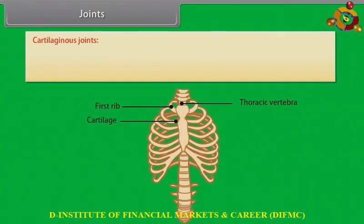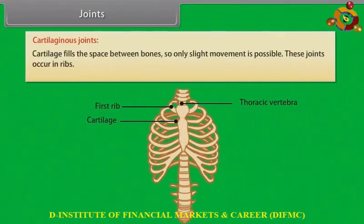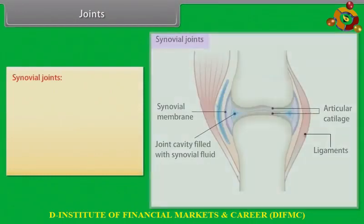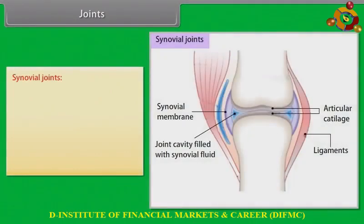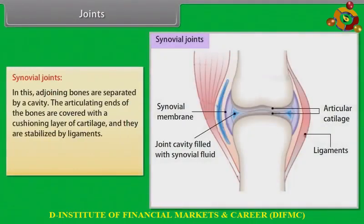Cartilaginous joints: cartilage fills the space between bones, so only slight movement is possible. These joints occur in the ribs. Synovial joints: in these, adjoining bones are separated by a cavity. The articulating ends of the bones are covered with a cushiony layer of cartilage and they are stabilized by ligaments.